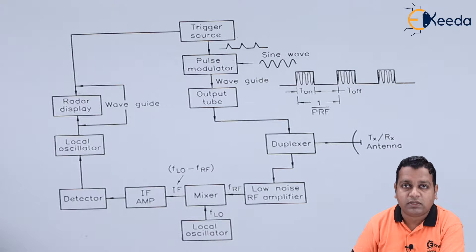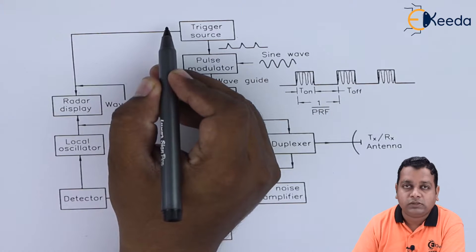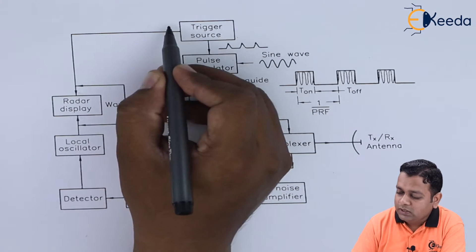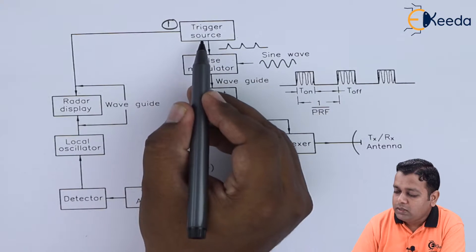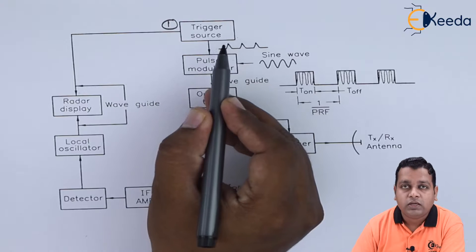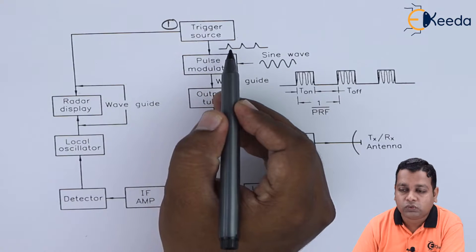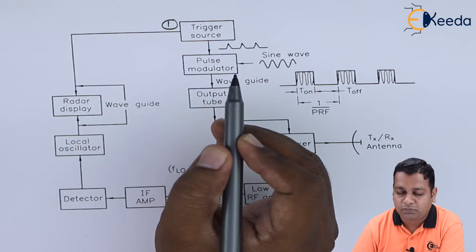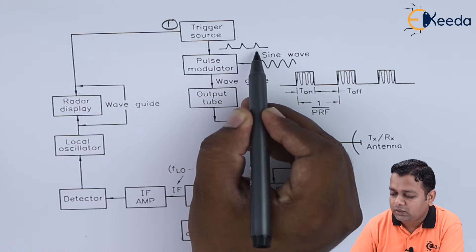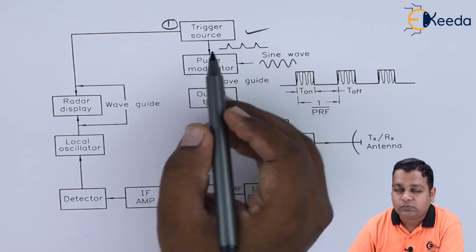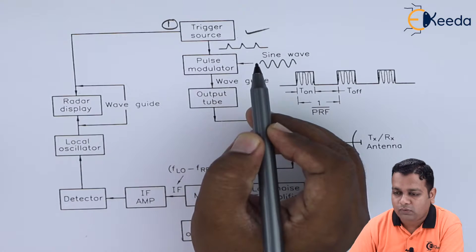We can start to learn the various details for the blocks involved from this particular position. The first block is named the trigger source. The trigger source is basically the source of pulses for the modulation operation purpose. You can see here some pulses have been represented that are provided by the trigger source. This is the initial block.